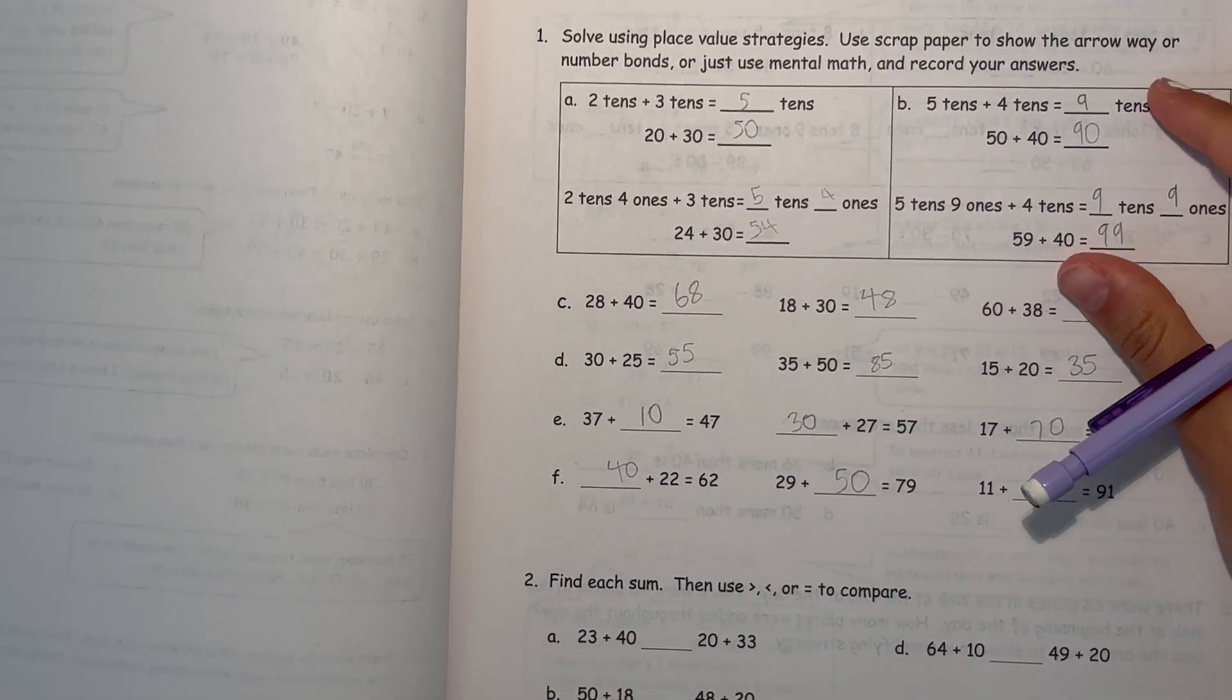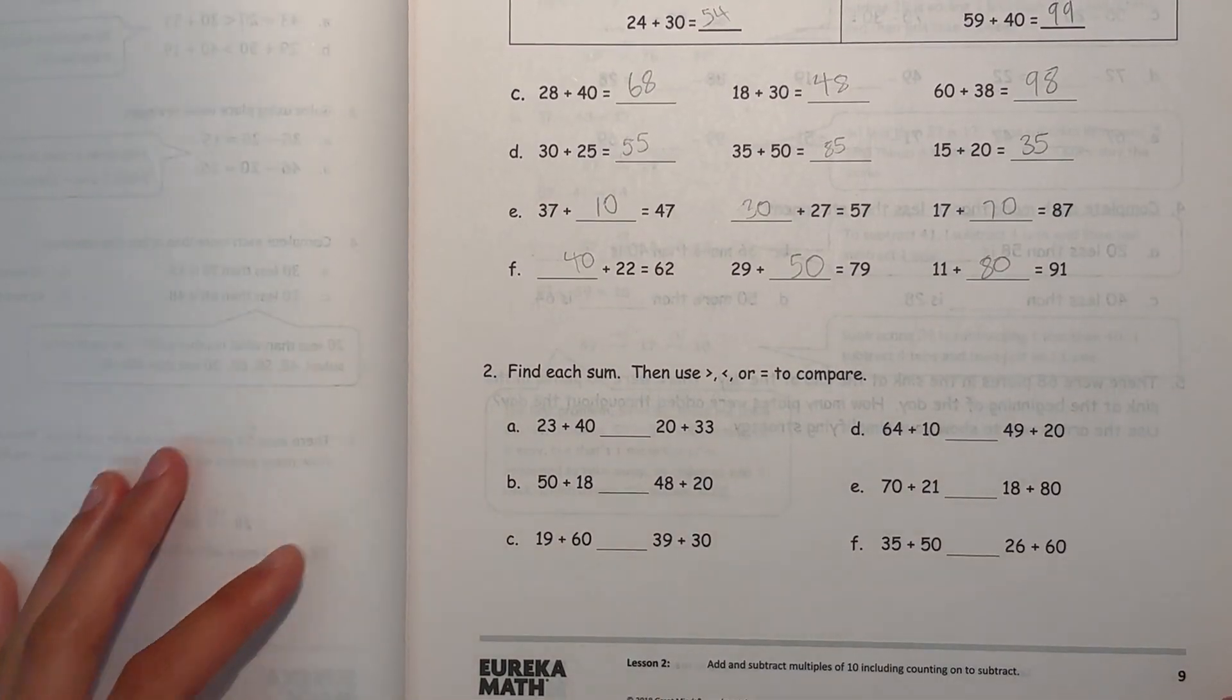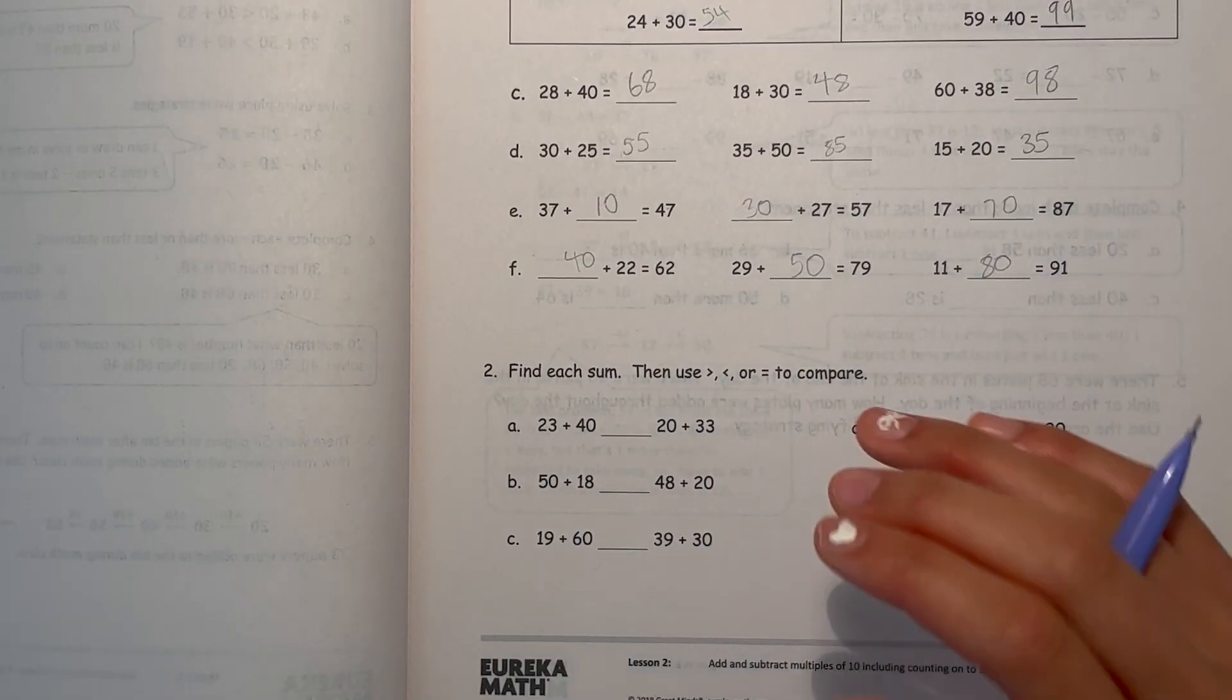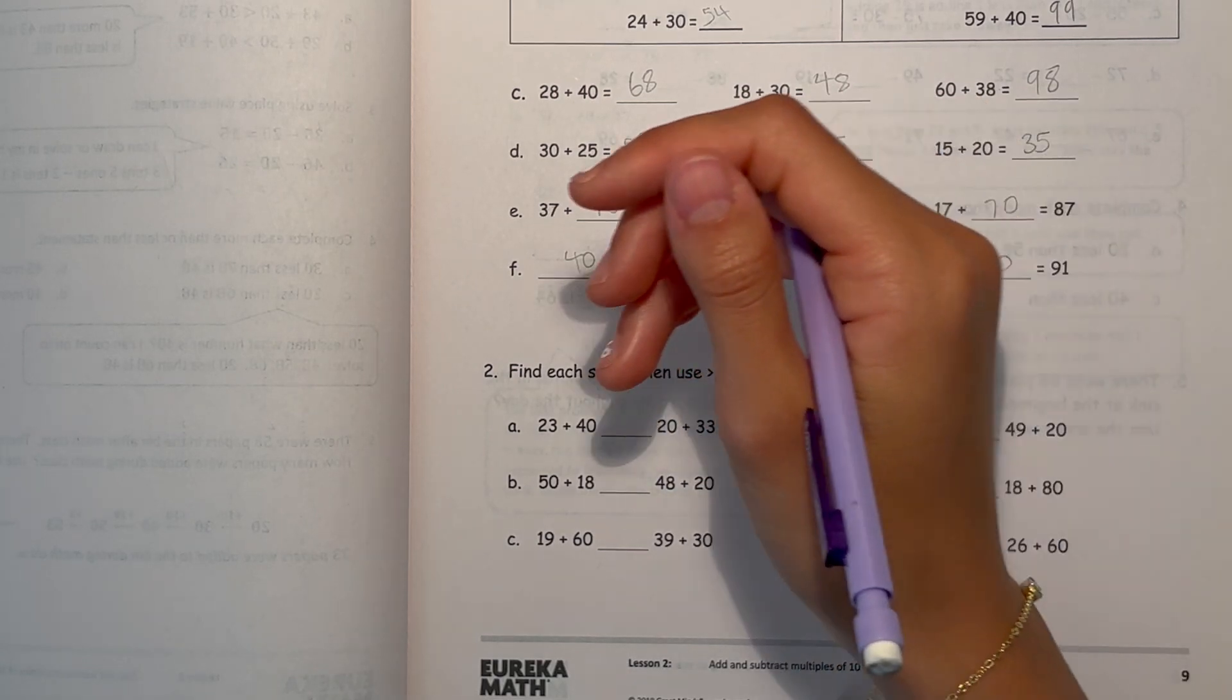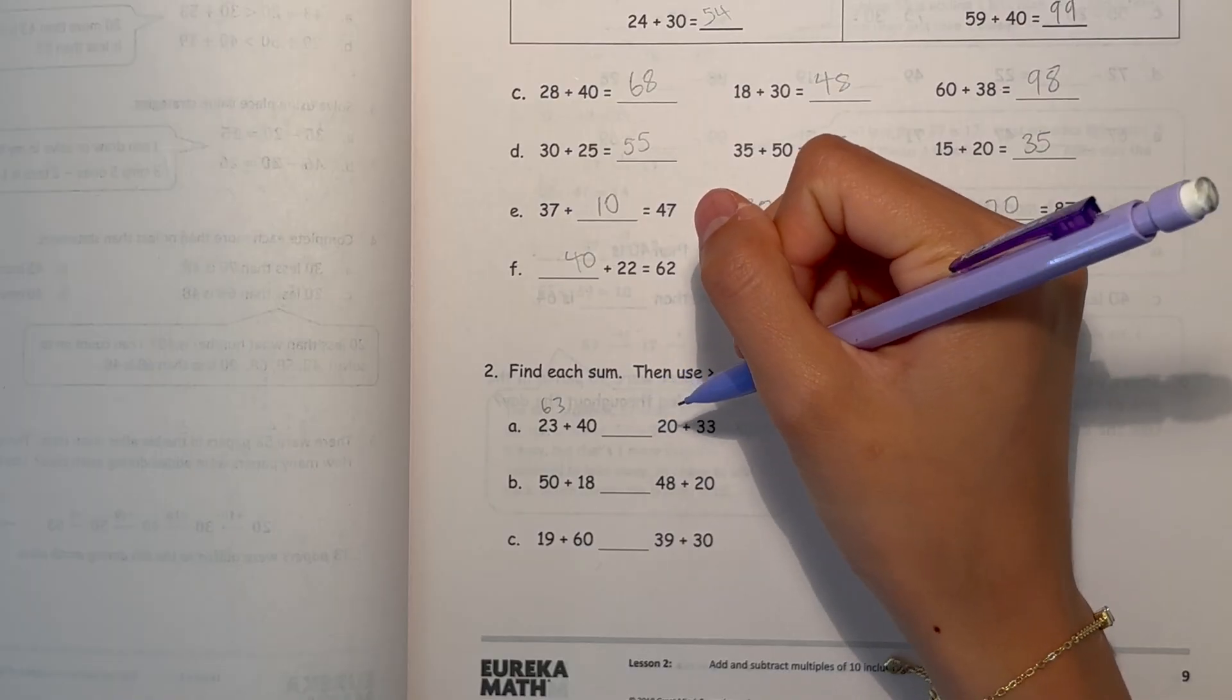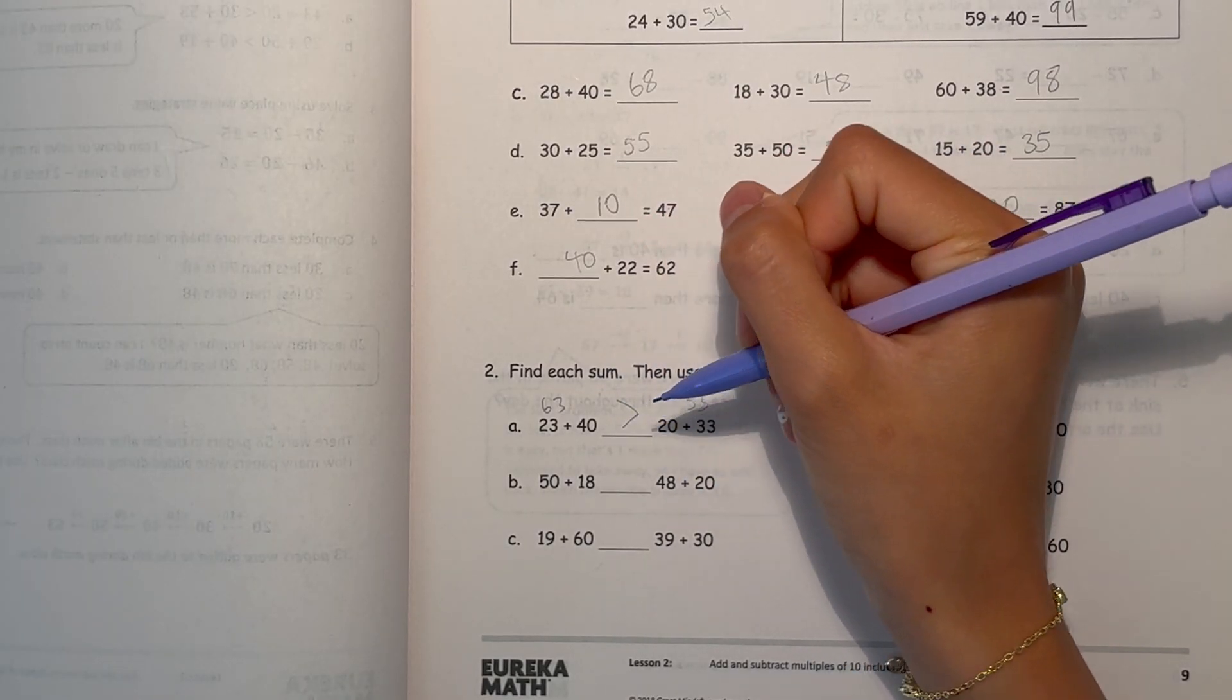Alright, now number 2. So let's find each sum. Use greater than, less than, or equal to, to compare. 23 plus 40 is 63. And 20 plus 33, that's 53. So 63 is greater. So that side is greater.